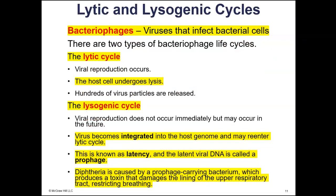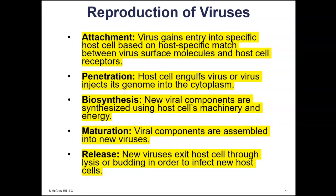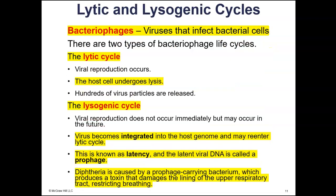Penetration involves either the virus being engulfed by the host cell or the virus injecting its DNA or RNA into the host cell. Biosynthesis is when the host cell produces the components to make new viruses. Maturation is when those components are assembled. The new viruses are then released — either through the cell lysing, which kills the host cell, or through budding, where the host cell survives though damaged. This cycle — attachment, penetration, biosynthesis, maturation, and release — is called the lytic cycle. Once it reaches the last stage, the host cell undergoes lysis and is killed.